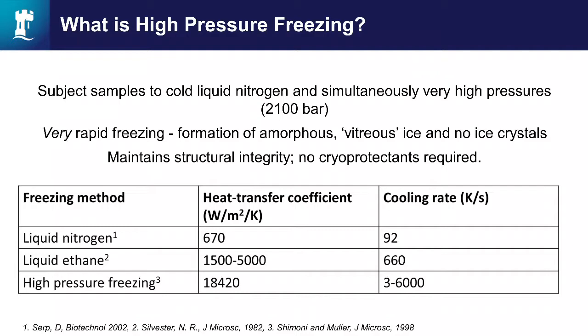I've got a table here that compares different freezing methods. So we can plunge into liquid nitrogen and that is a relatively slow cooling rate because it's a relatively small heat transfer coefficient for liquid nitrogen. You do get a vast improvement if you move to freezing your samples in liquid ethane, but high pressure freezing, you can see there's an order of magnitude improvement in the quality and the rate of freezing because you get such a rapid cooling rate.